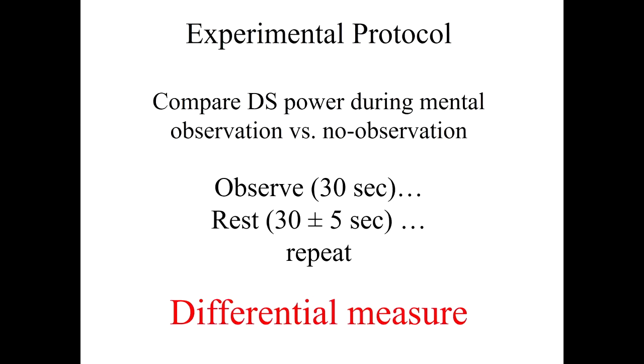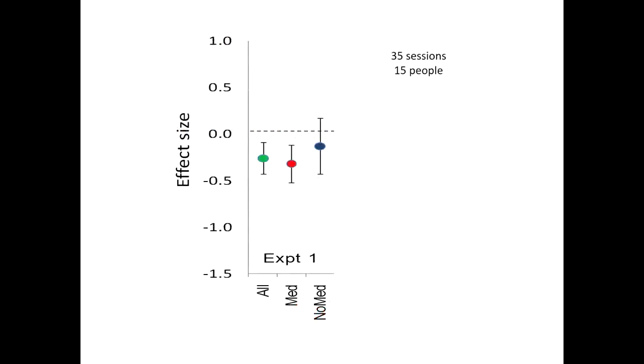So we did our first experiment in this form. This was 35 sessions, 20 minutes apiece, 15 people contributed. Overall, you can see the mean and one standard error. We did actually pretty good. Meditators did a little bit better than the non-meditators. And the prediction was that the double-slit power would drop during observation, and indeed that's what we saw.